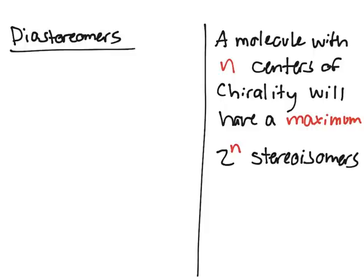We'll talk about instances where it won't have 2 to the n stereoisomers. It'll actually have less. Those are molecules that are meso. And we'll talk about that later. But for this video, I want to talk about diastereomers.